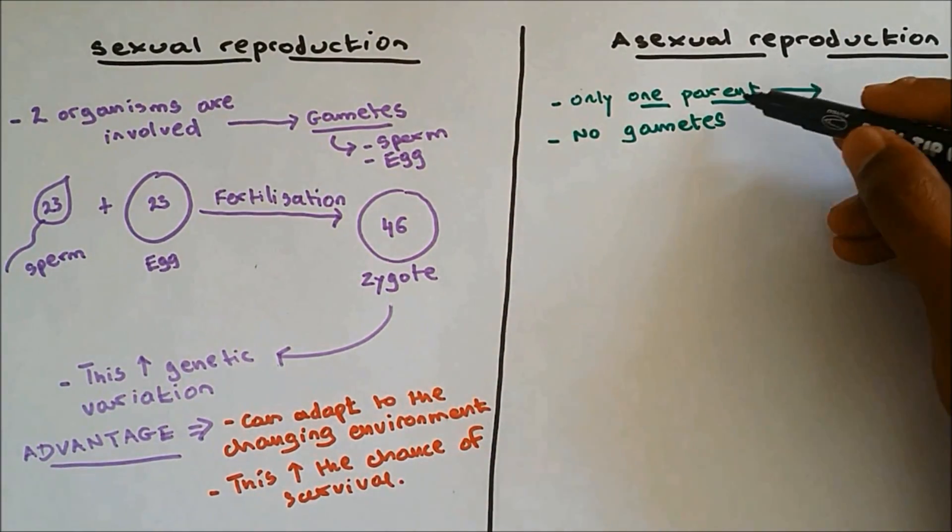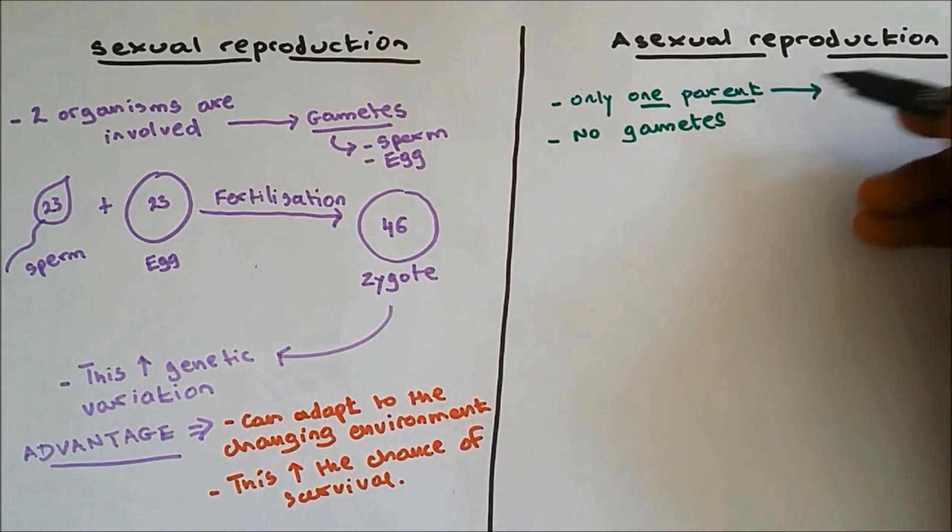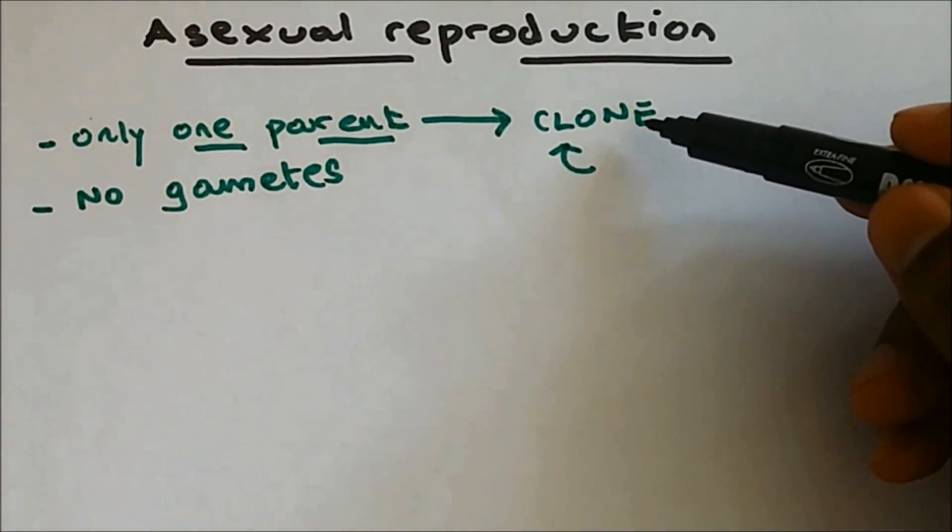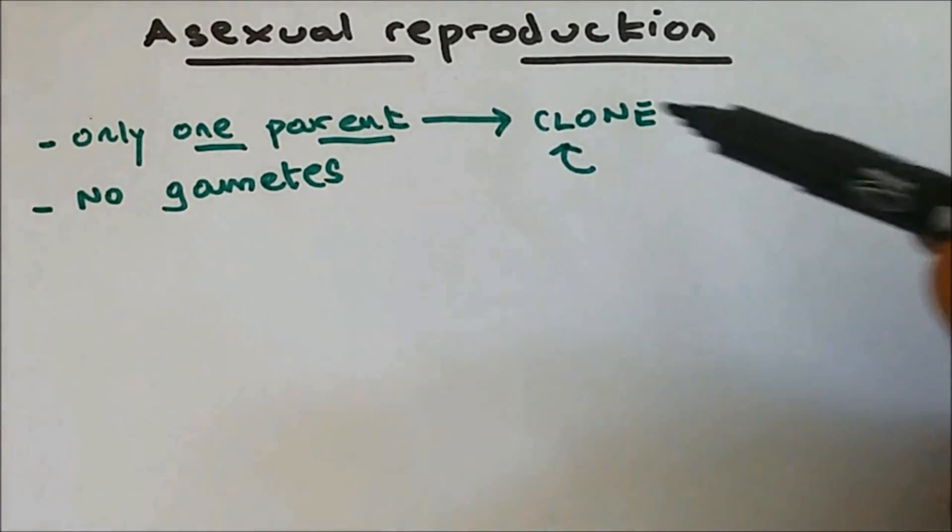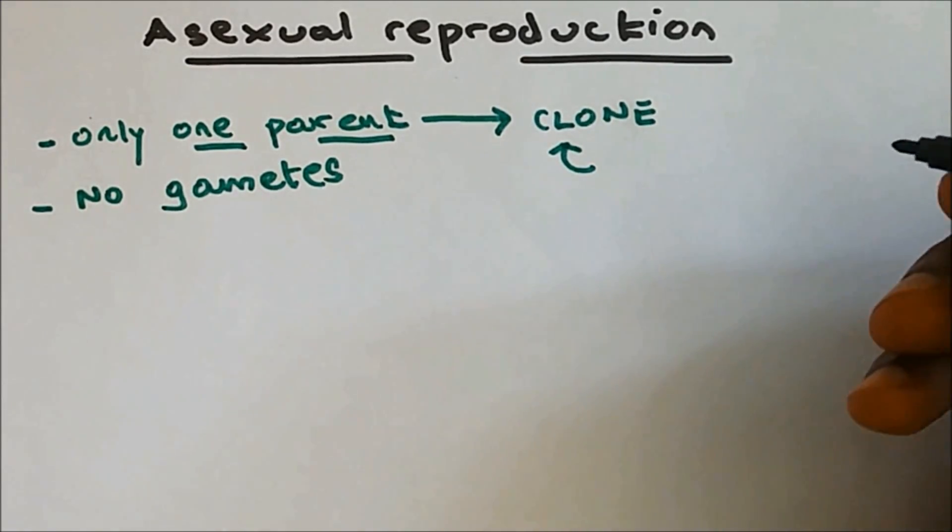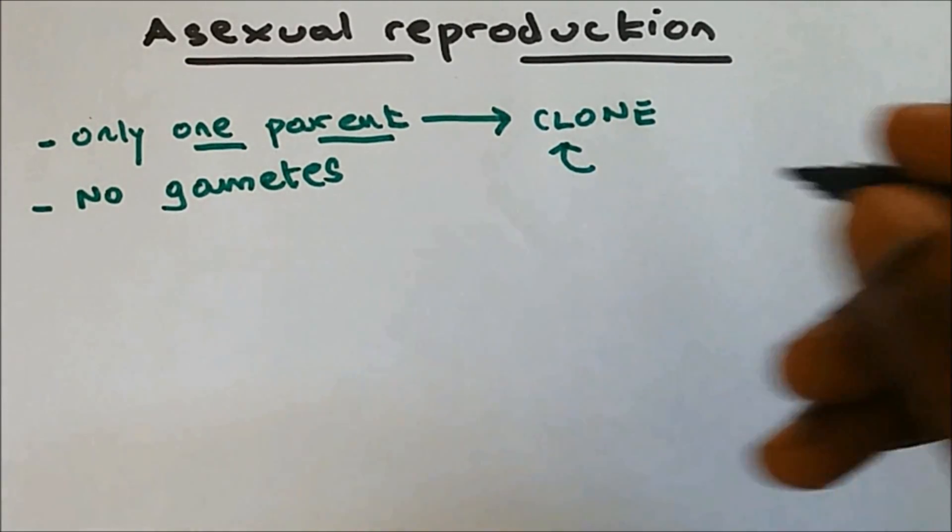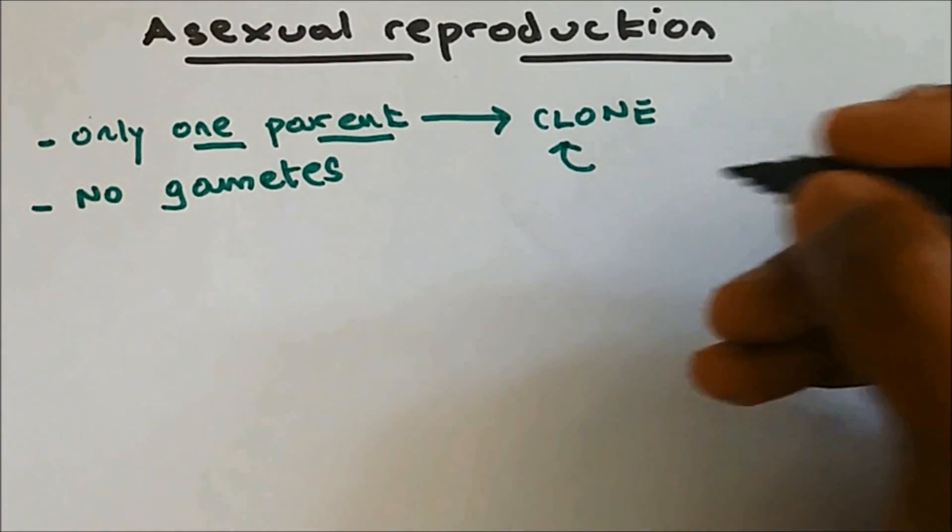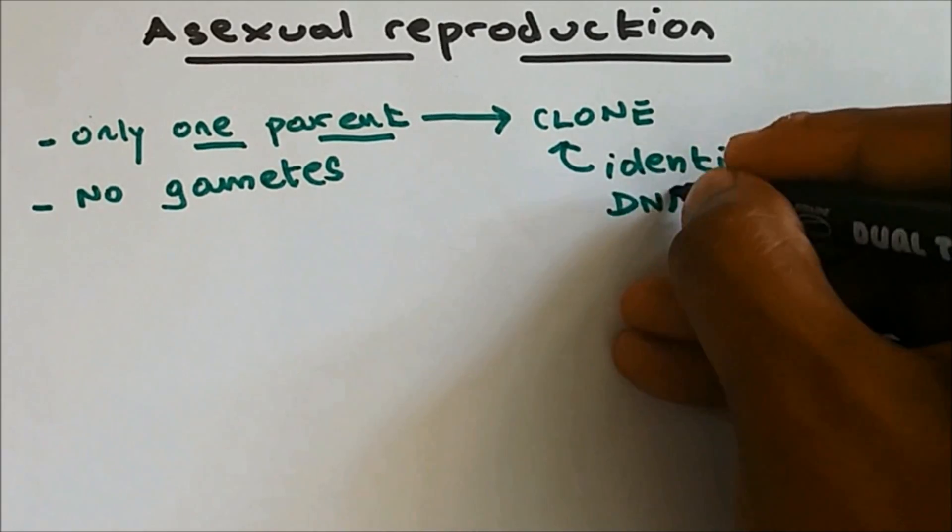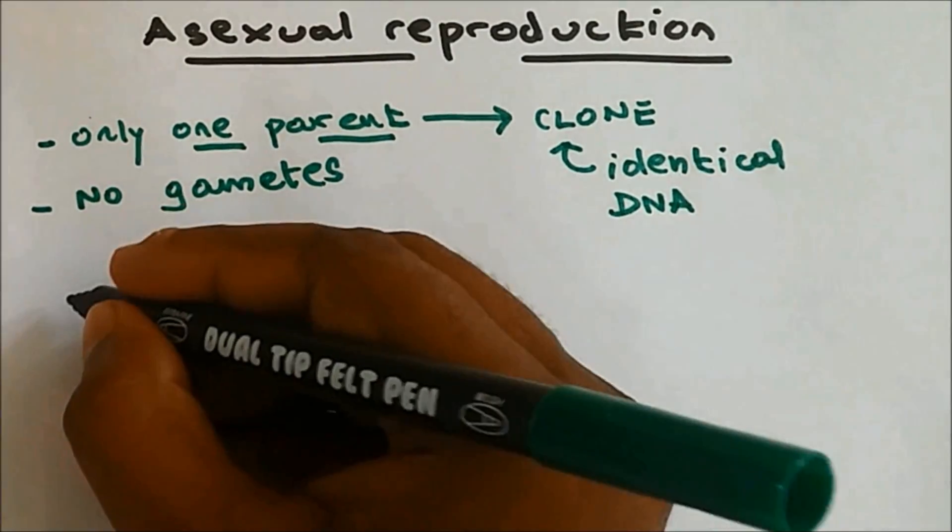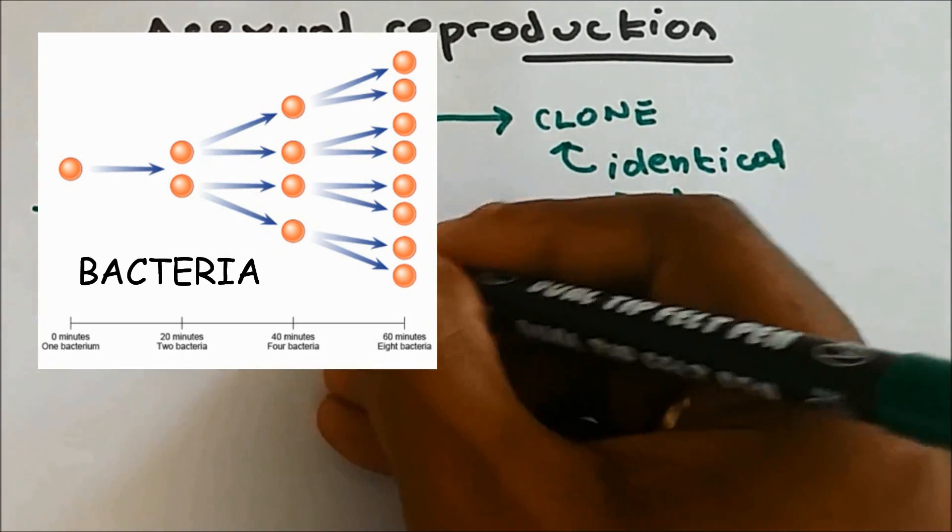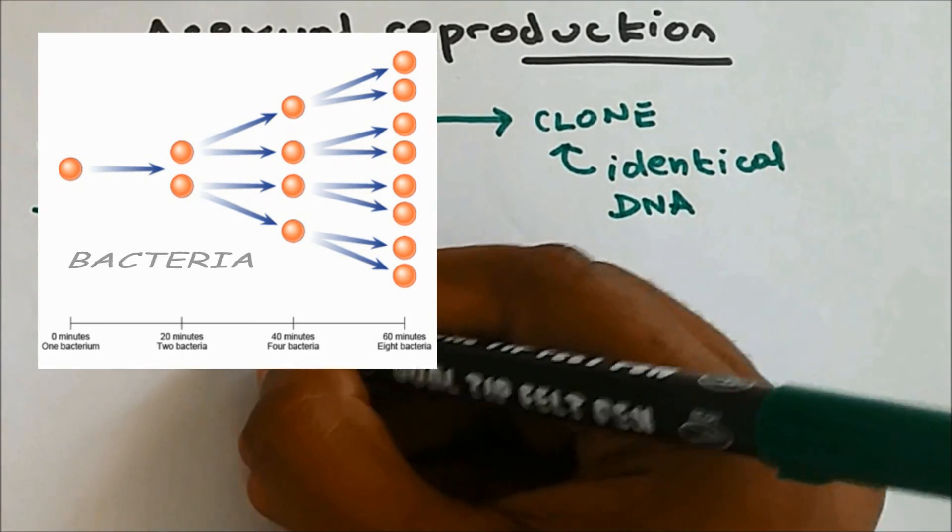The offspring made from the original species is called a clone. The clone will be identical to the parent, and the reason is because it contains identical genes. So a clone is known as identical DNA or identical genes. An example where asexual reproduction happens is bacteria and certain plants. An example of this plant would be strawberry plant.